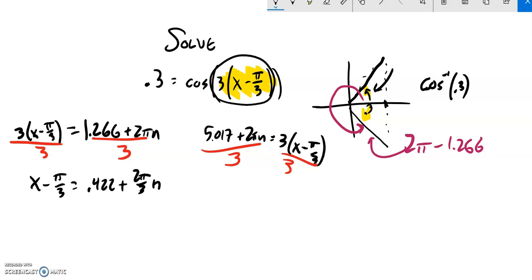This one I'm doing the 5.017 divided by 3, which gives 1.672. Again plus the 2π over 3n equals x minus π/3.